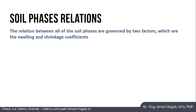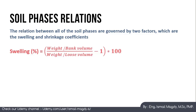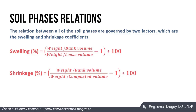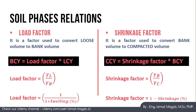Once soil is removed from its original condition it starts swelling. The swelling percentage is calculated as: (bank density / loose density − 1) × 100. The soil shrinks after compaction, and the shrinkage percentage is calculated as: (bank density / compacted density − 1) × 100.